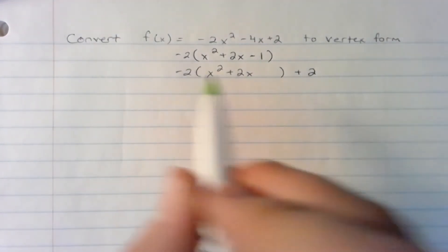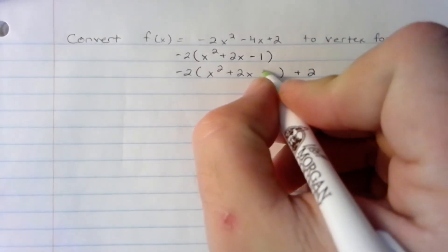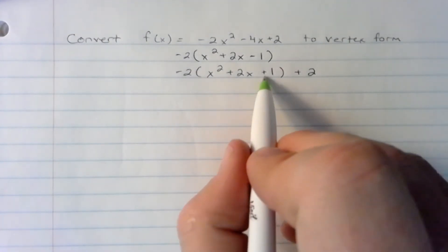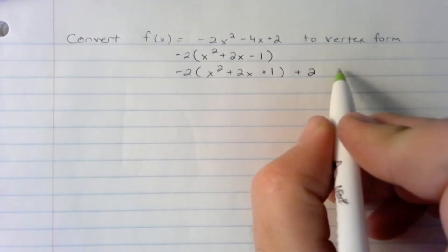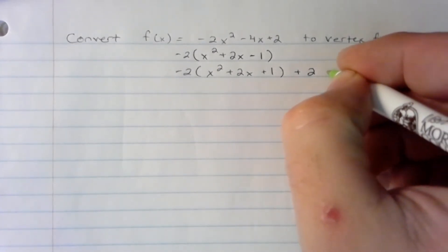So on the outside, I have negative 1 times negative 2, which is a positive 2, plus 2, plus 2. And rewriting everything again gives me a plus 4.